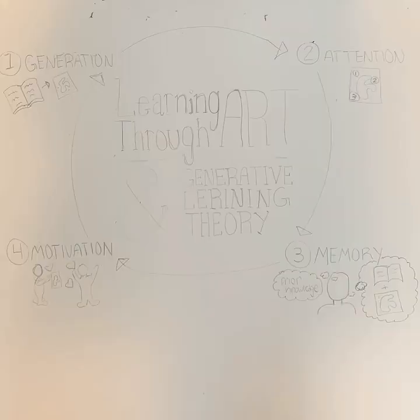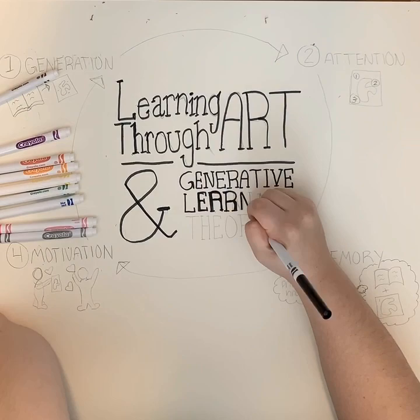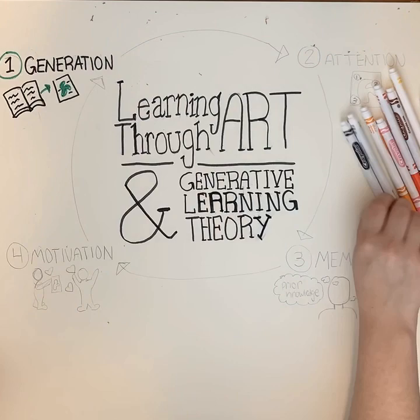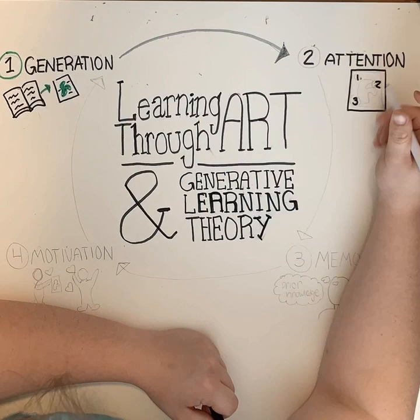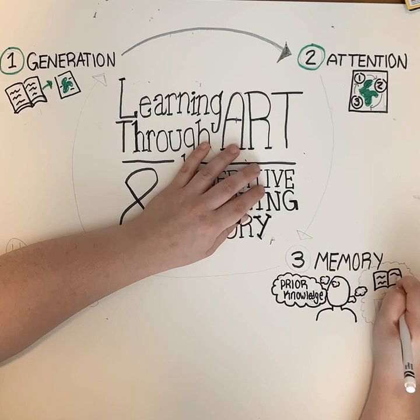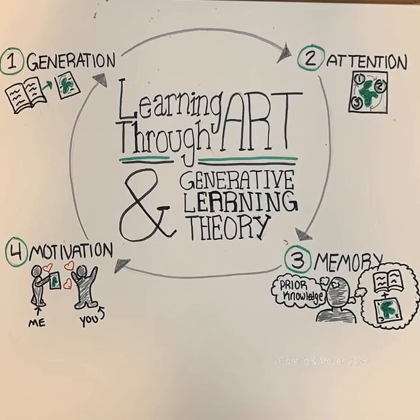How does learning through art embody the generative learning theory? Well, that's a great question. In concern to generation, the simple act of translating text to a pictorial representation prompts the learner to select the most relevant information from the text. Next, attention would allow us to process the organization of the information spatially in a drawing. After that, we'd use our memory — our prior knowledge — to clarify the meaning of the text in relation to the drawing. Lastly, our motivation: this strategy won't work if you're focusing on the action of drawing itself rather than the material, so it works best with people who love to draw, like me.